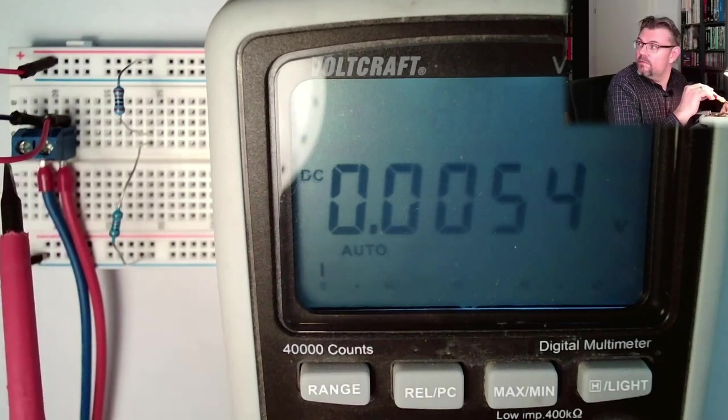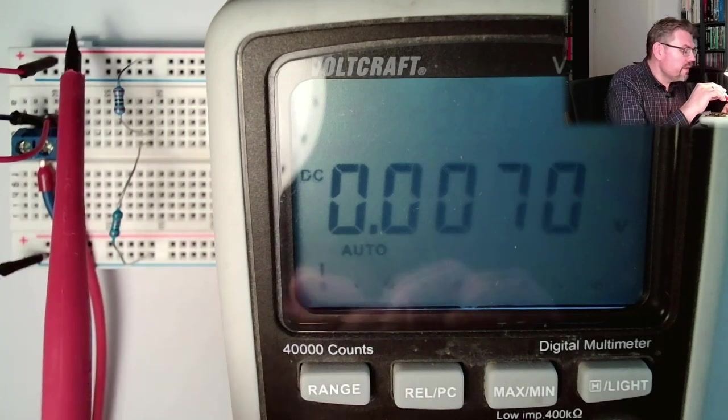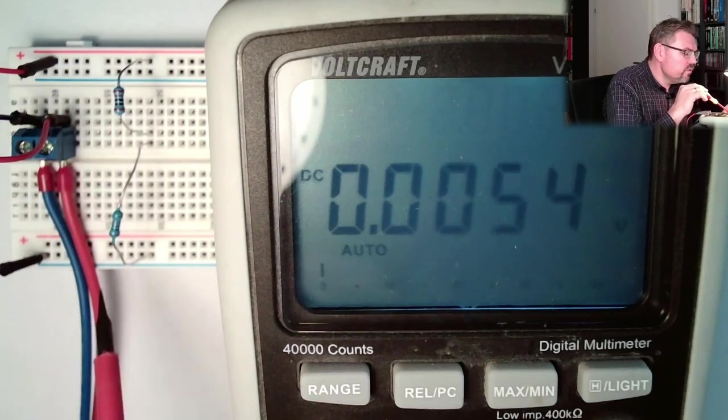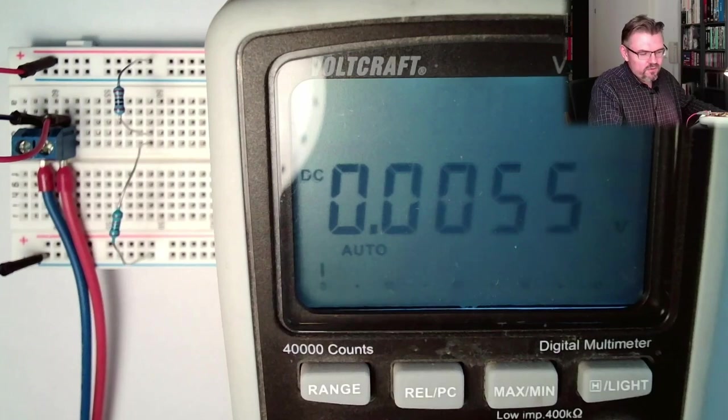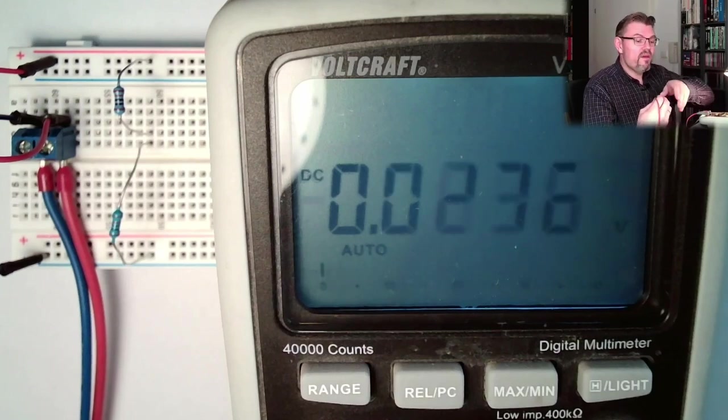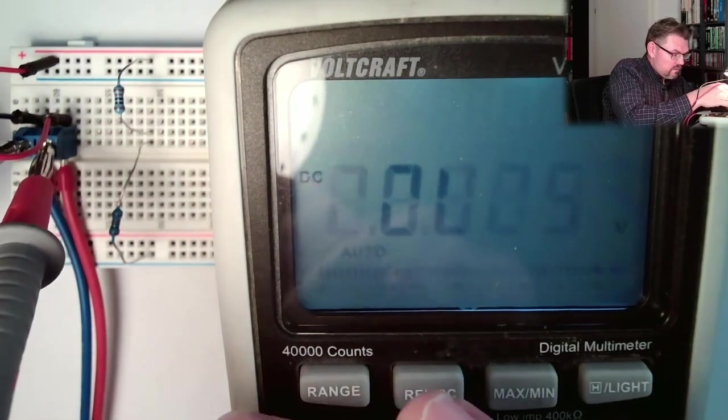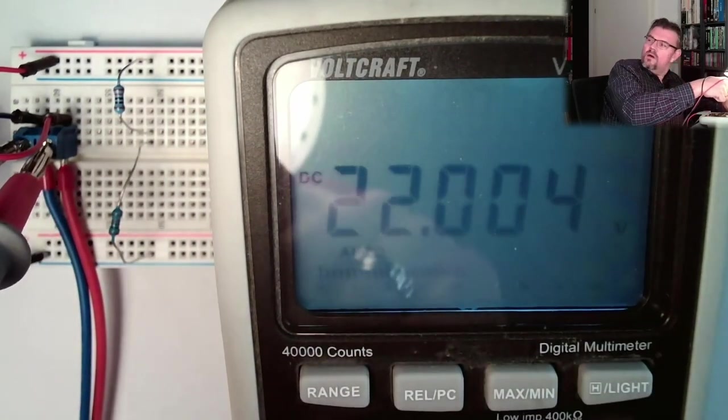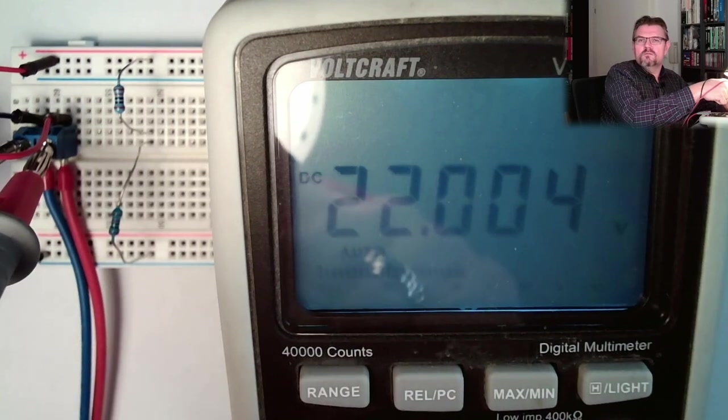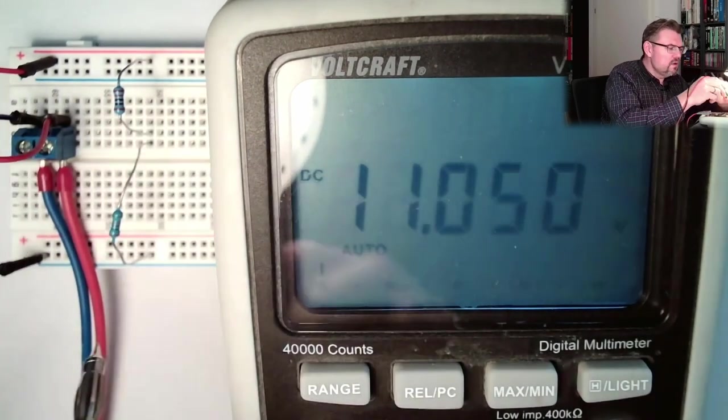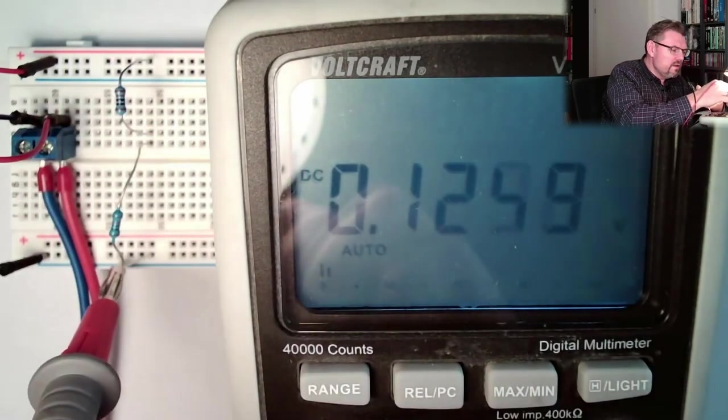And here we have a voltage source, a power supply. Here with the red line, I go to the red line here. This is plus. And here with the blue line, I go to the blue line here. This is minus. And what potential difference, what voltage, do we have between plus and minus? Let's determine this. We do have 22 volts.